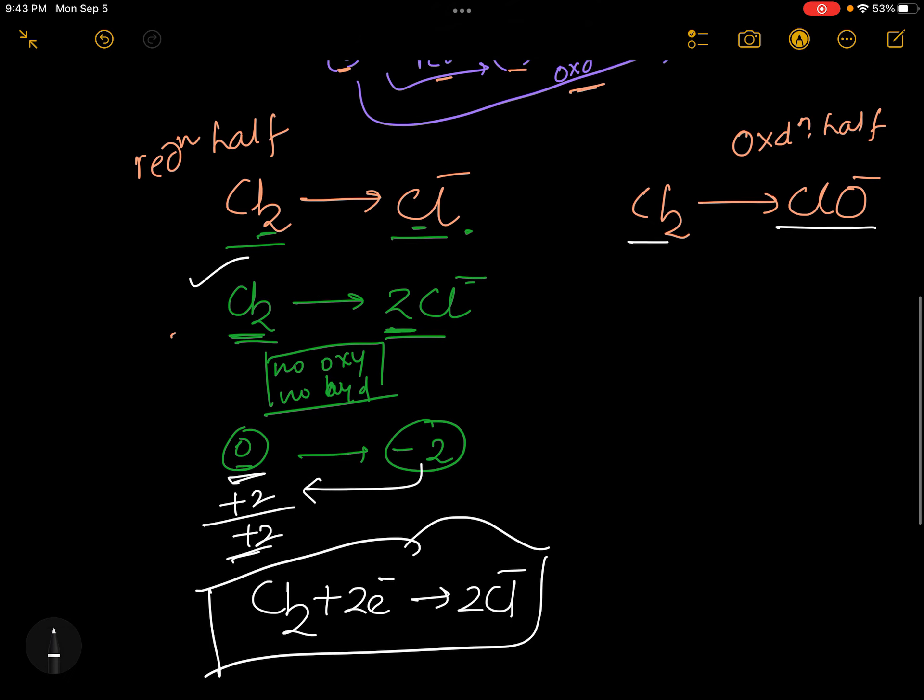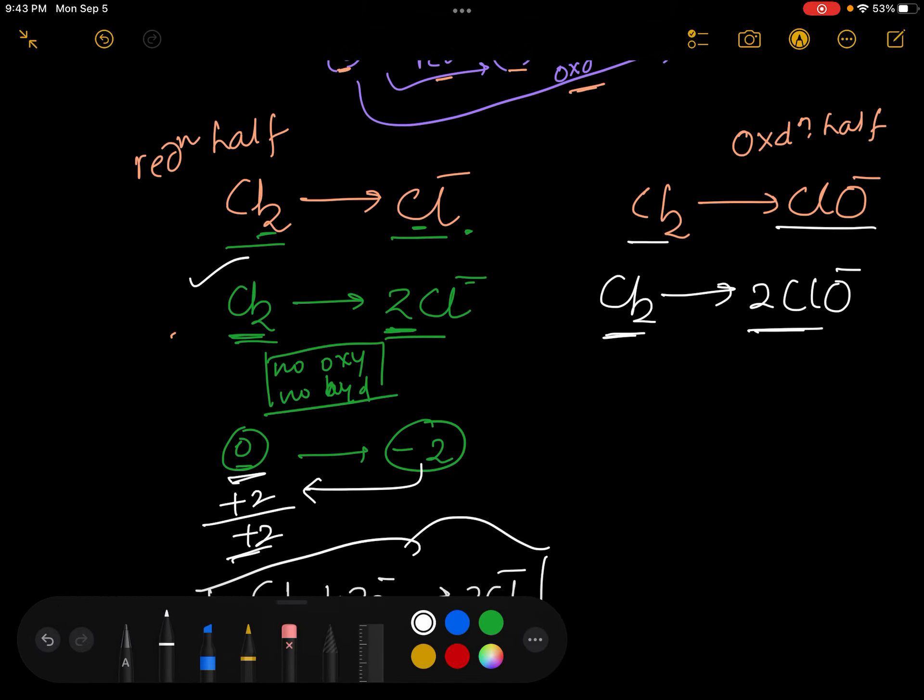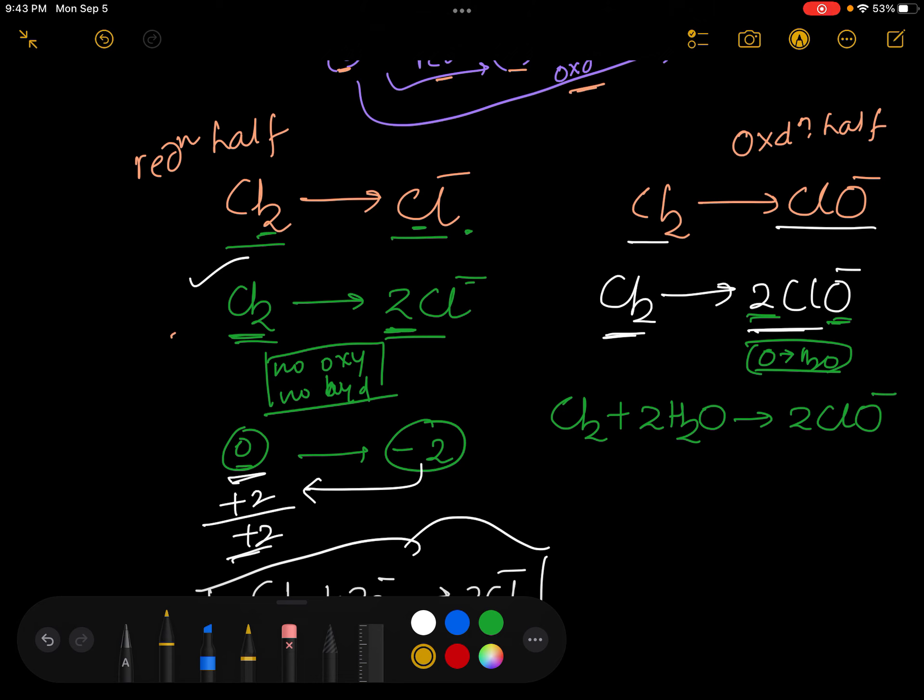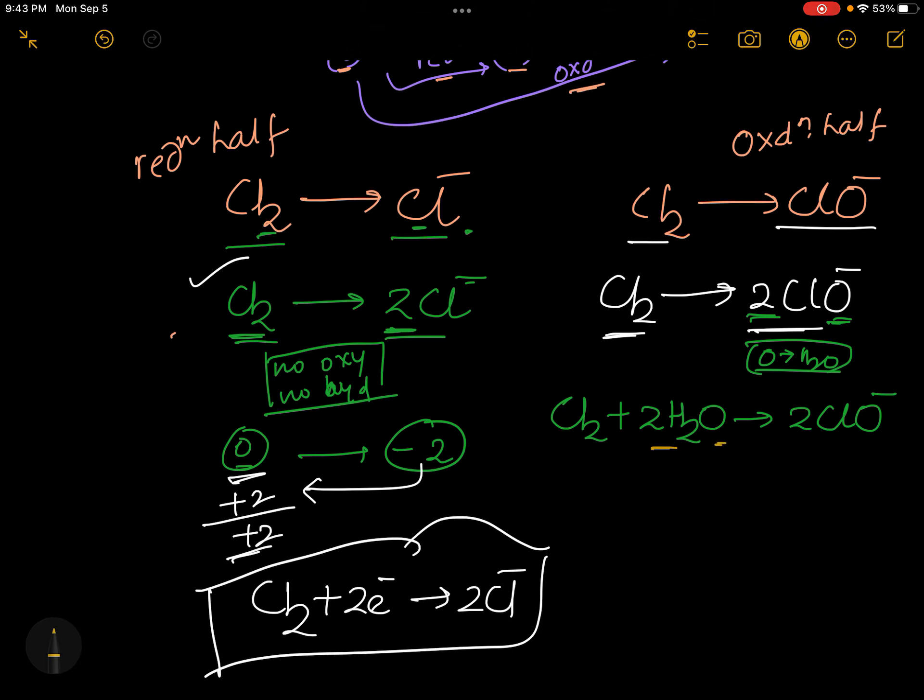Cl2 gives ClO minus. Then we will balance the chlorine atoms. Here we have two chlorines and here we have two chlorine atoms. Next we are going to balance the oxygen atoms. If oxygens are less, you should use water. Here we have two oxygens, so this side you need to add two water molecules. Clear?